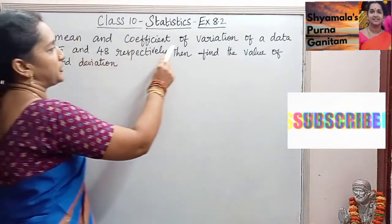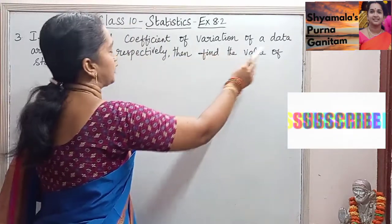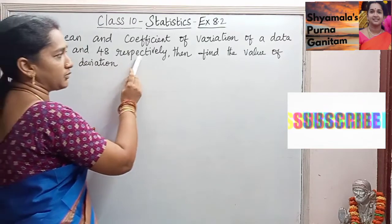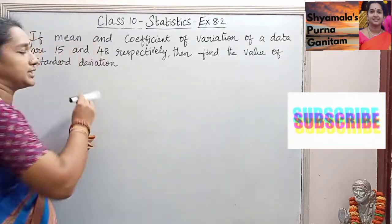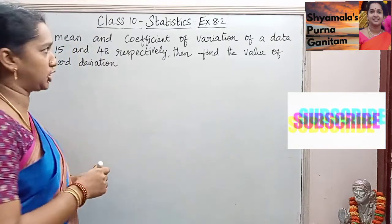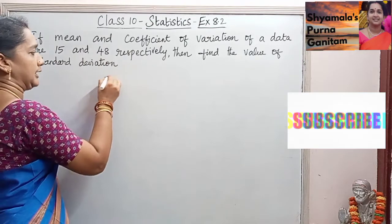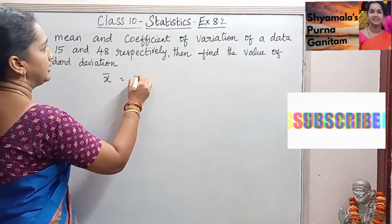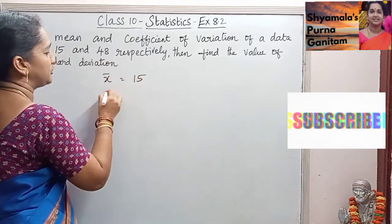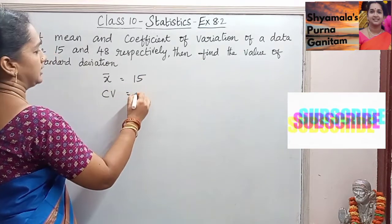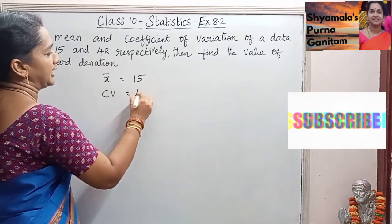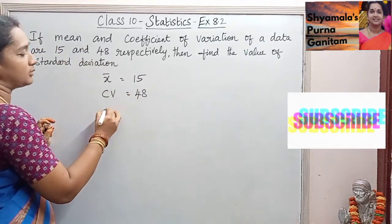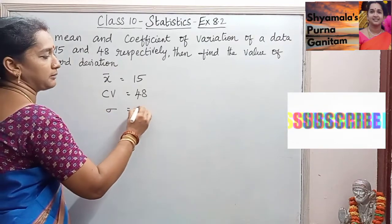If the mean and coefficient of variation of a data are 15 and 48 respectively, then find the value of the standard deviation. So mean, that is x̄, is given as 15, and the coefficient of variation is given as 48. We are asked to find the value of the standard deviation, sigma.